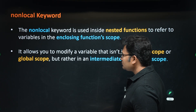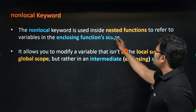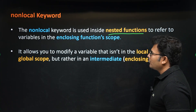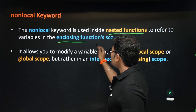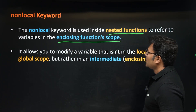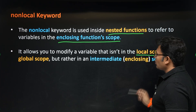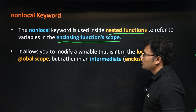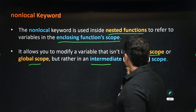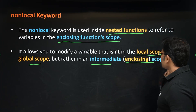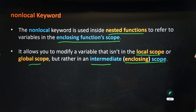The non-local keyword is used in the case of nested functions, whenever you need to use the enclosing function's scope. It allows you to modify a variable that is neither a local nor a global variable, but rather an intermediate — the enclosing scope variable.